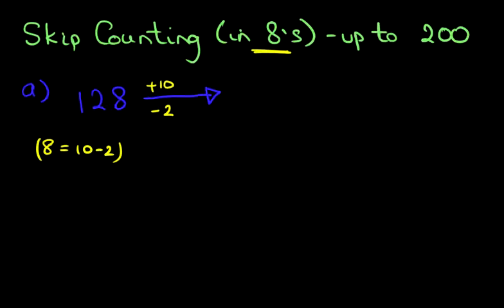So let's do this first part. We've got 128 plus 10 is 138. And then we've got the second part, which is 138 minus 2, which is 136. The answer is 136. We added 10 and then subtracted 2. So the number after 128, when counting in eights, is 136.